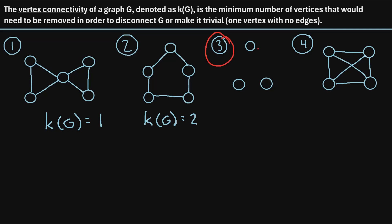Let's check out example number three. Here we have a graph with three vertices but no edges connecting them. This graph is already disconnected, so the vertex connectivity, or kappa of G, of this graph is zero. This will be true of all disconnected graphs — the number of vertices you need to remove to make it disconnected is zero because it's already disconnected.